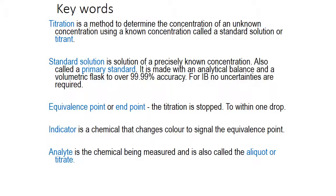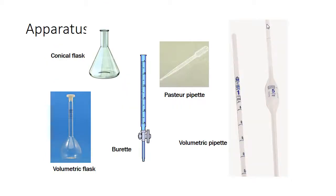A titration is a method of finding unknown concentrations using known concentrations called a standard solution — a solution of precisely known concentration, also called a primary standard, made on an analytical balance with a volumetric flask of 99.99% accuracy. The equivalence or end point is where the titration stops; an indicator is a chemical added to show you've reached the end point; and an analyte is the chemical being measured, also called a titrate or aliquot. Equipment includes a conical flask, volumetric flask, burette, and volumetric pipette.